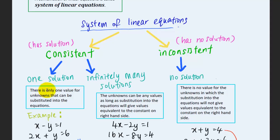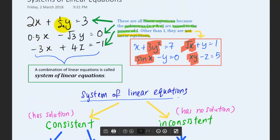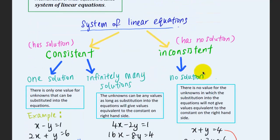For the consistent class, you either have one solution — meaning there is only one set of values for the unknowns that satisfies the equations — or infinitely many solutions, meaning there are many possible values for the unknowns that can be substituted into the equations and give values equivalent to the constant on the right-hand side.